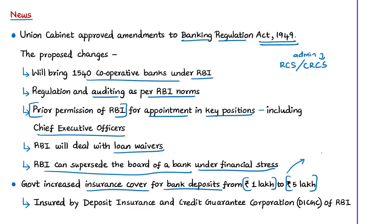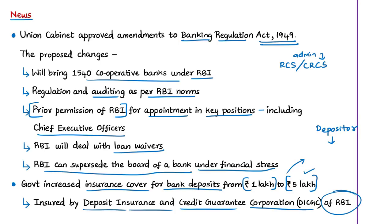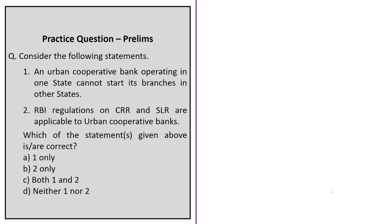The government also decided to increase insurance cover on bank deposits from the current ₹1 lakh to ₹5 lakh, to strengthen the financial stability of cooperative banks and boost public confidence in the banking system. Till now, each depositor was insured up to a maximum of ₹1 lakh — applicable for both principal and interest. Bank deposits are insured by the Deposit Insurance and Credit Guarantee Corporation (DICGC), a subsidiary of the Reserve Bank of India.